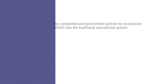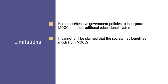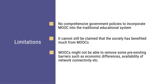When we look at the limitations of MOOCs, we find that MOOCs have not yet been able to find a place for themselves in the conventional education system. There are no comprehensive policies that support their incorporation into the conventional system, which is a challenge to the authenticity of MOOCs. Secondly, one cannot yet say that society has benefited largely from MOOCs because it is just starting to make its presence felt. MOOCs may also find it difficult to remove some pre-existing barriers among learners, which can range from economic differences to something as simple as the availability of network connectivity.